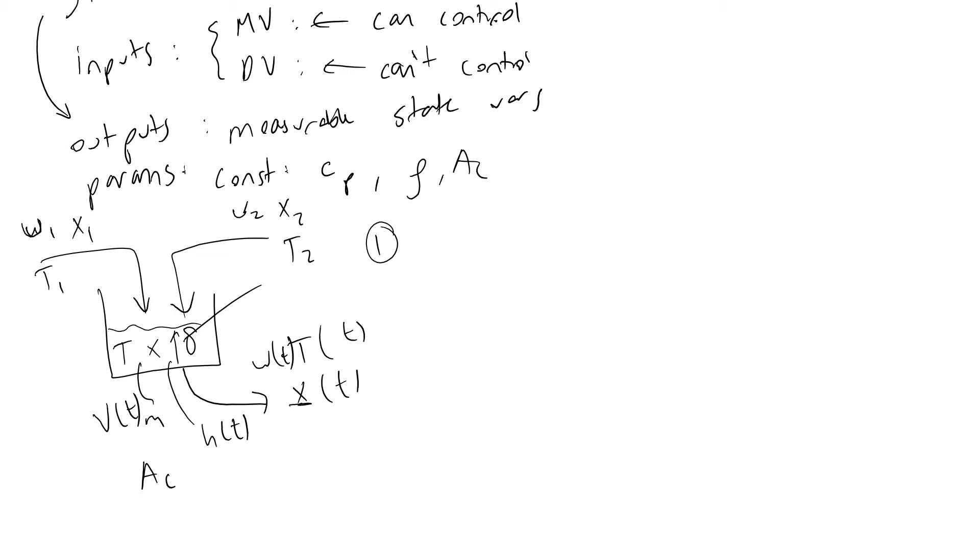For the overall mass balance, dm/dt equals d(ρV)/dt. We can usually assume density is independent of time if it's independent of temperature.